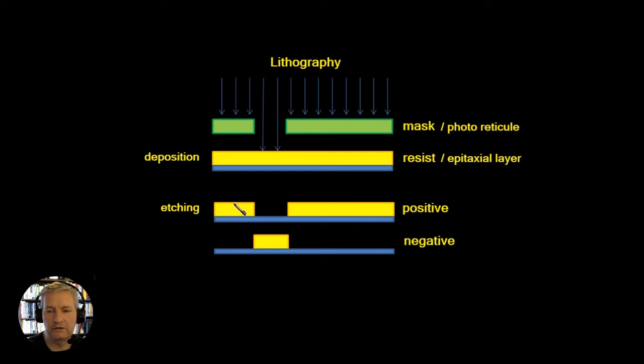And again we can etch away certain regions of it and we can add photoresist on top and we can again do etching and other processes. So that's a broad introduction to the processes above the silicon layer, so let's have a look at the processes that we can do within the silicon.